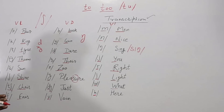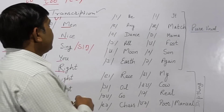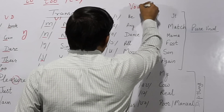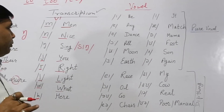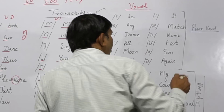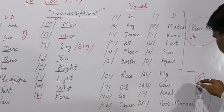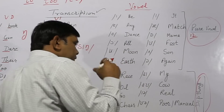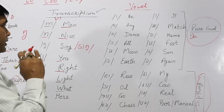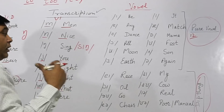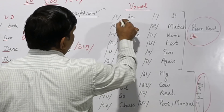Now let's discuss vowel sounds. In vowel sounds we have 20 sound symbols. Out of these 20, we have 12 pure vowels and 8 diphthongs. Diphthongs are sound symbols made of two vowel sounds combined together to create a new sound.